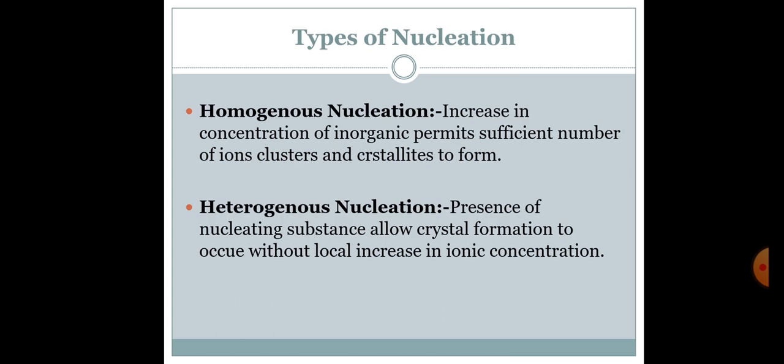Types of nucleation: Homogeneous nucleation — an increase in concentration of inorganic ions permits a sufficient number of ions, clusters, and crystallites to form. Heterogeneous nucleation — planes of the nucleating substance allow crystal formation to occur without a local increase in ion concentration.